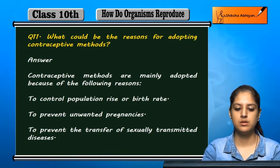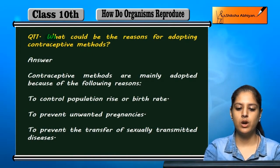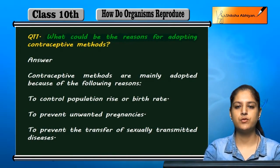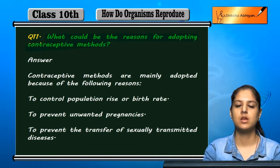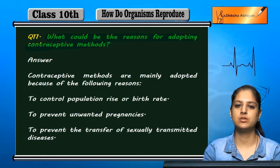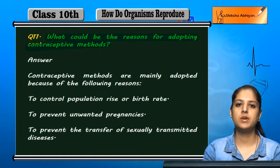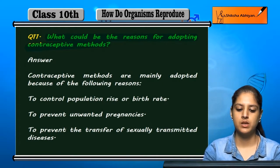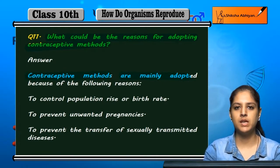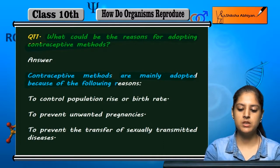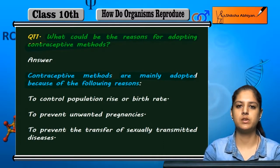Question number 11. What could be the reasons for adopting contraceptive methods? Contraceptive methods are mainly adopted because of the following reasons.